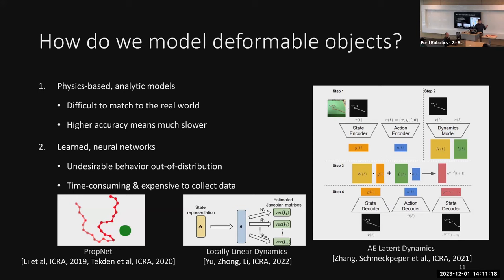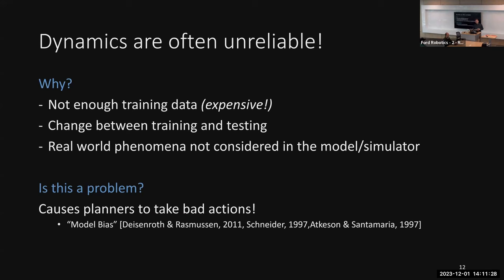The broader focus is that in practice any of these models are likely to be unreliable. For learning-based methods, you might not have enough training data, or you trained with one rope and now have a different one. Physics-based models may miss phenomena entirely through intentional simplifying assumptions. This is a known problem: planners tend to exploit imperfections in the dynamics model and produce actions for which dynamics are unreliable, resulting in plans that don't actually solve the task.